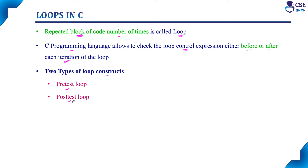One is pre-test loop and another one is post-test loop. Pre-test loop, as the name implies, means the loop control expression will be tested before executing the body of the loop. Every time, if the expression is true, only then the body of the loop will execute. In a post-test loop, by default, the body of the loop will execute one time first, and after execution the loop control expression will be tested. If the condition is true, the body executes one more time. Since the loop control expression is tested after executing the body once, this is called a post-test loop.